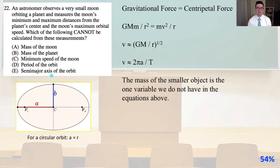So v is going to about equal square root of GM over r, and v is going to about equal 2 pi a over t. And for a circular orbit, a is going to equal r. You can see the diagram provided over here. The mass of the smaller object is the one variable we do not have in the equations above. And so that is therefore going to be answer A, the mass of the smaller object being the mass of the moon.